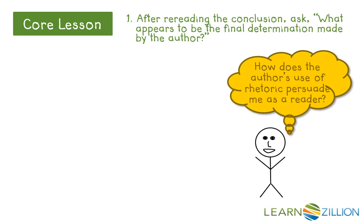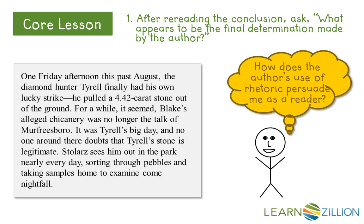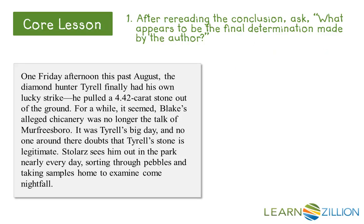Since I want to know how the author's use of rhetoric may persuade me as a reader, I begin by rereading the conclusion. I want to determine if the author is presenting an answer to the question about the provenance of Blake's diamond. In the conclusion, I find the statement: "For a while, it seemed Blake's alleged chicanery was no longer the talk of Murfreesboro."